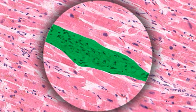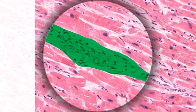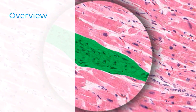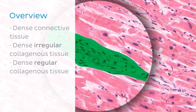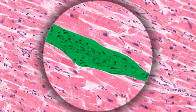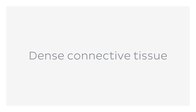During the rest of this tutorial, I'll be giving you an overview of the properties and functions of dense connective tissue. After this, we'll go into more detail about its two subtypes, which are dense irregular collagenous tissue and dense regular collagenous tissue. Now let's dive in and take a closer look at dense connective tissue.